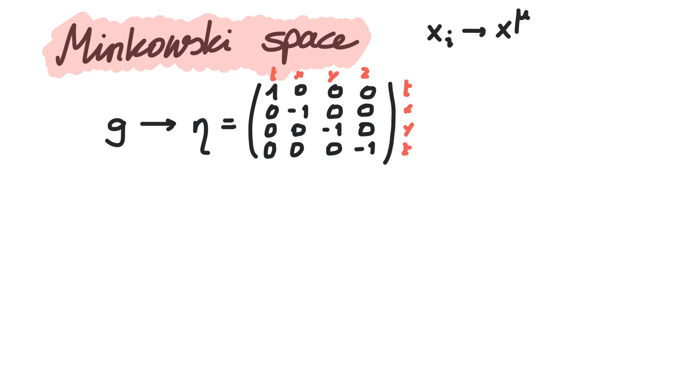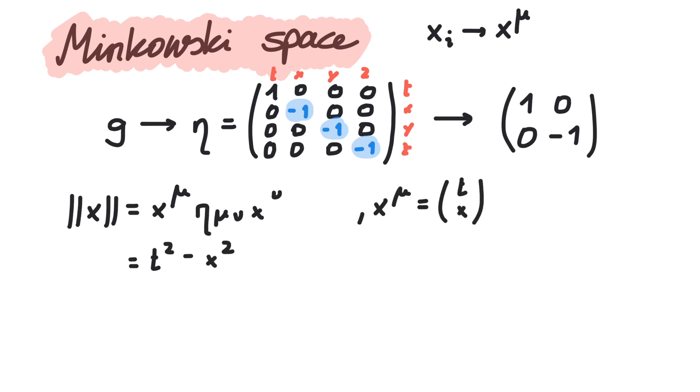The negative signs have profound consequences when it comes to measuring distances. Let's use one time coordinate and one space coordinate for simplicity. Then the metric looks like this. If we calculate the inner product of x with itself, we get t squared minus x squared.